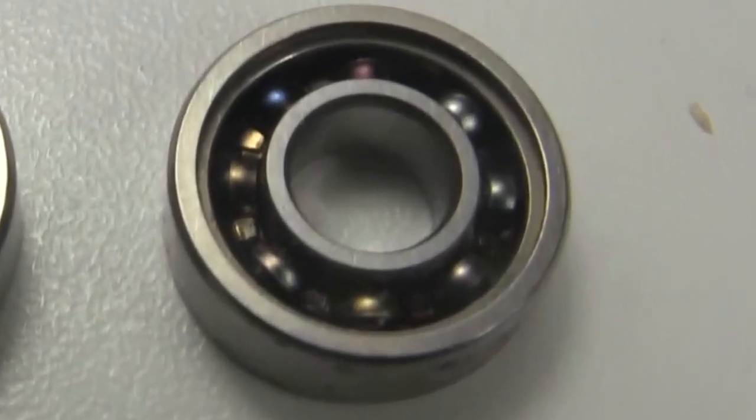This is what the bearings look like after too much heating. Plenty of carbon coating. Once they're like this, the motor no longer works.